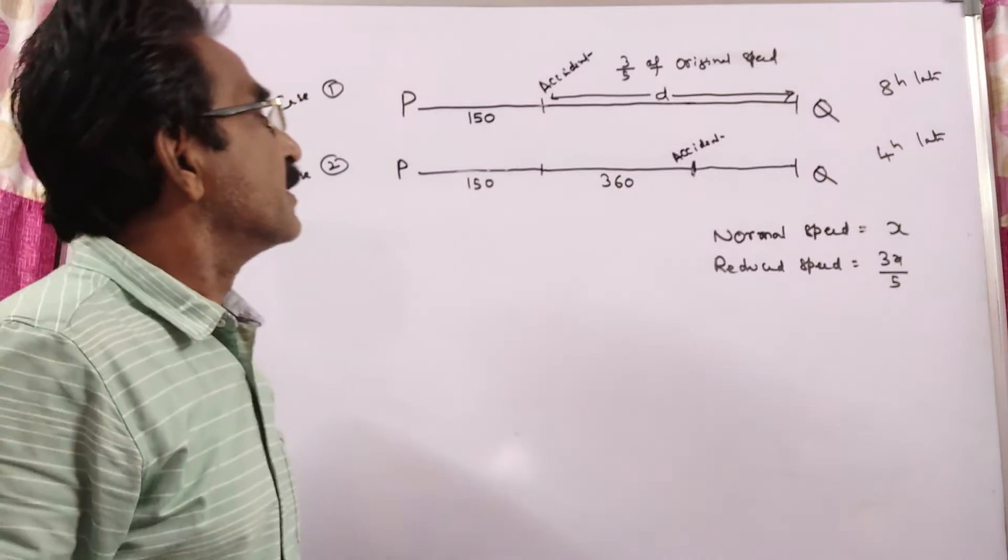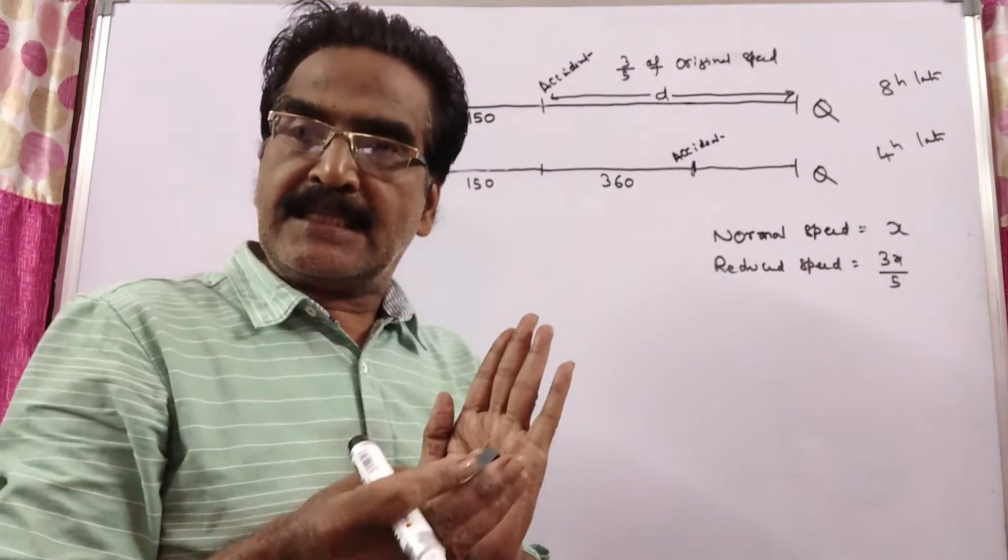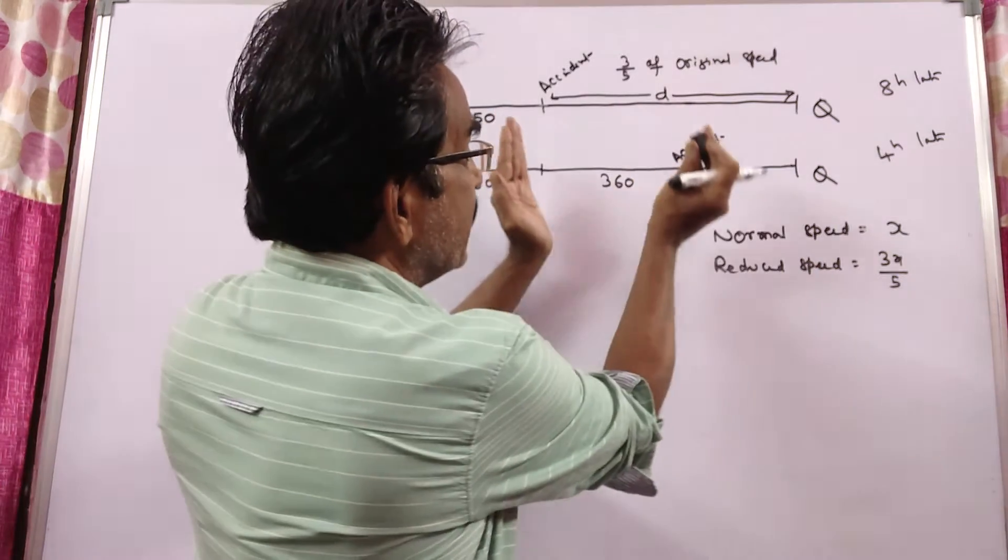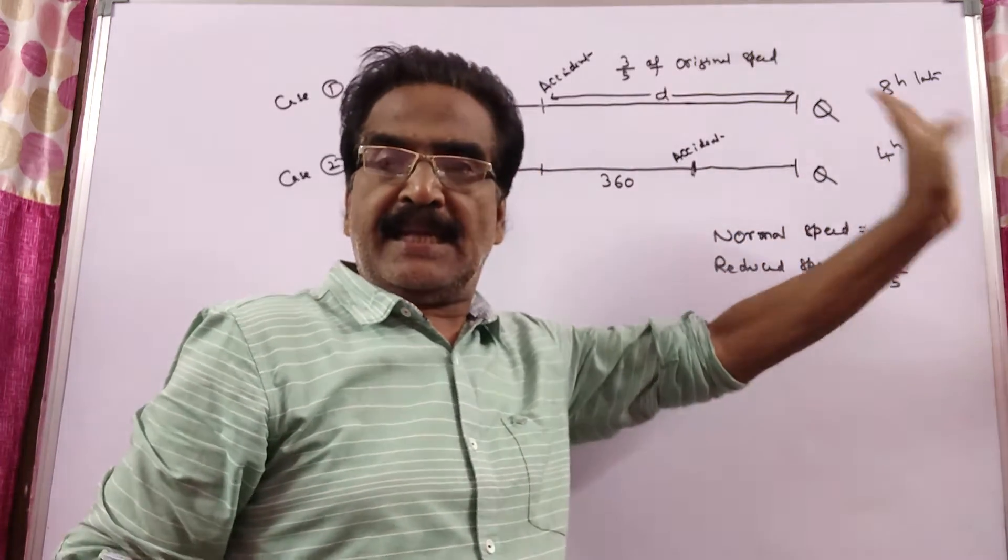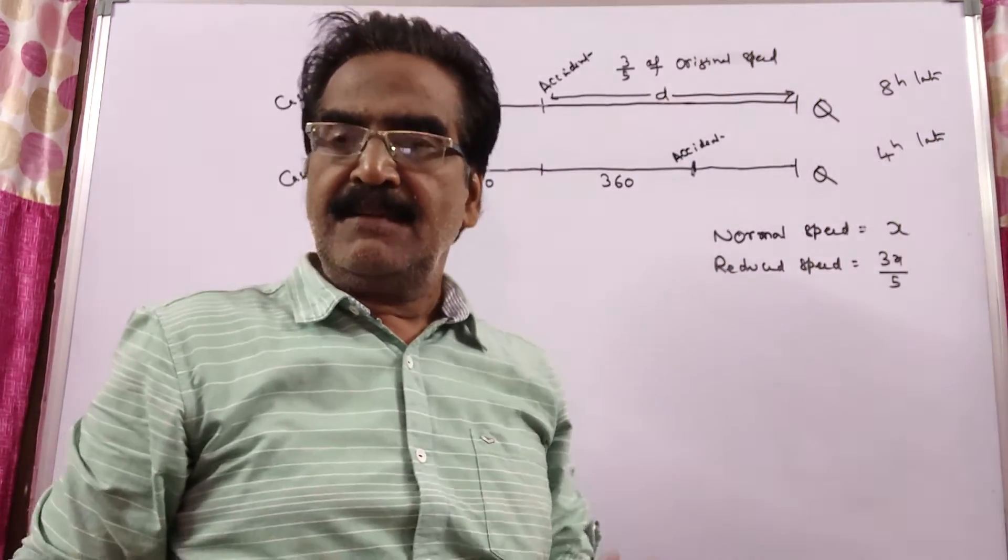And had the accident occurred 360 km further, it reaches only 4 hours late. Friends, first let us find the speed of the train.